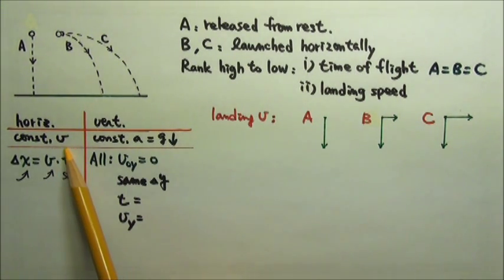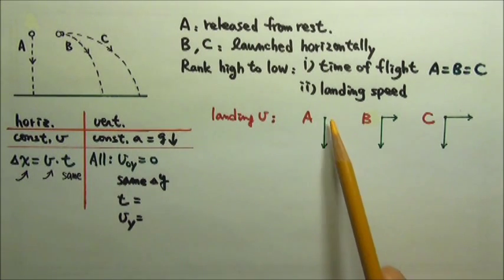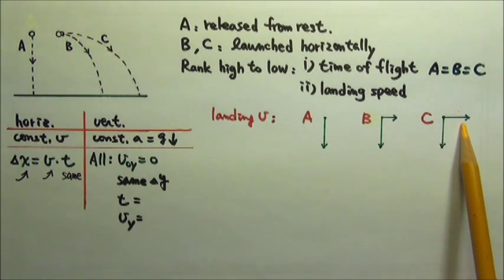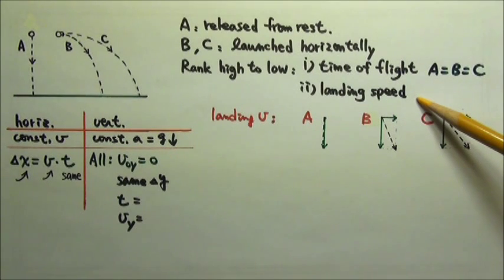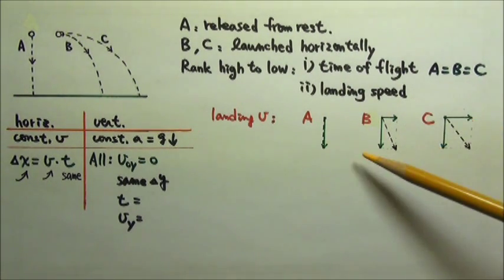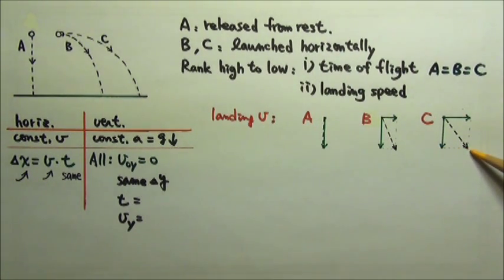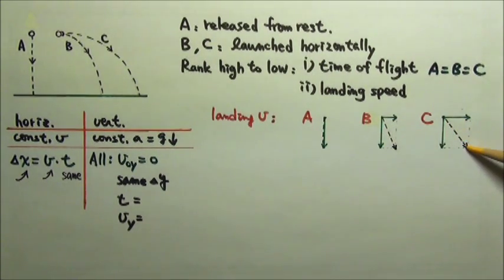Since it's constant velocity motion in the horizontal direction, these horizontal velocities do not change. Speed is the magnitude of the total velocity, and these are the total landing velocities for A, B, and C.